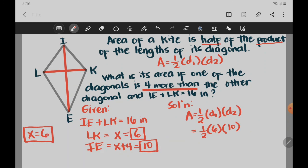1 times 6, 6 times 10, we're going to have 60 over 2. And then 60 divided by 2, we're going to have 30. So our area is 30 square inches. So therefore, the area of the kite is 30 square inches.